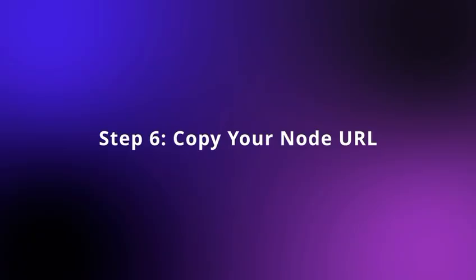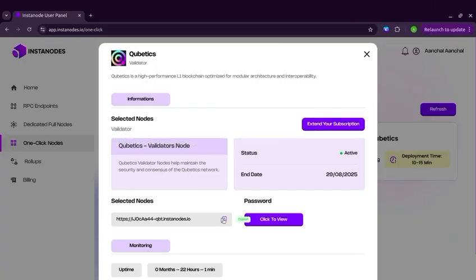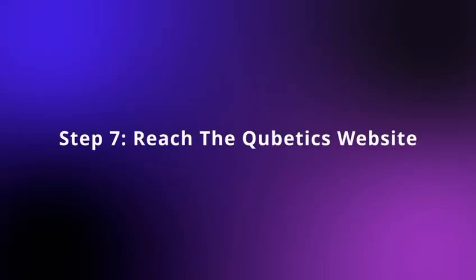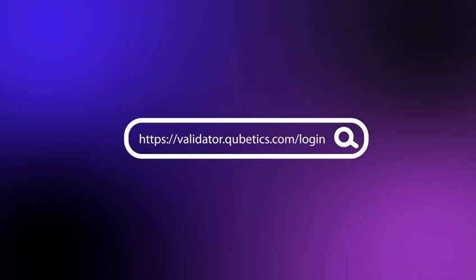Step 6: Copy your Node URL. You can now copy your Node URL. Step 7: Reach the Cubedix website. Click https://validator.cubedix.com.